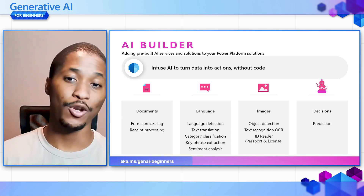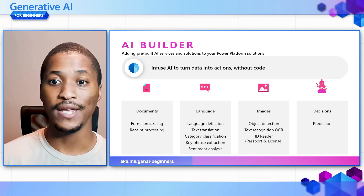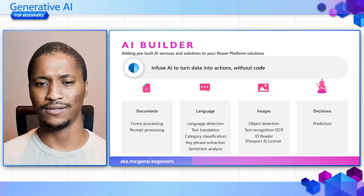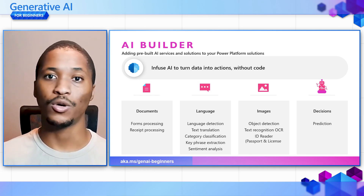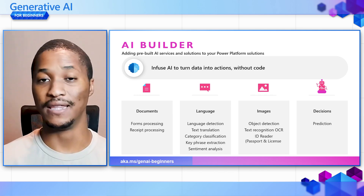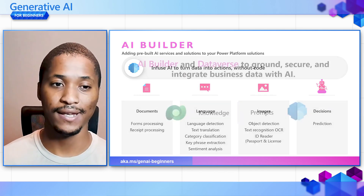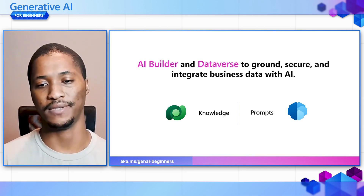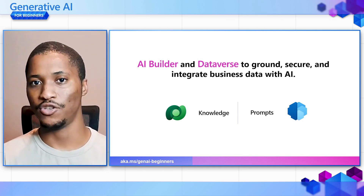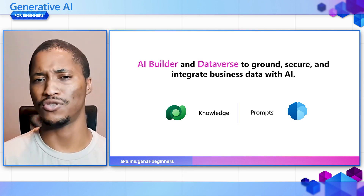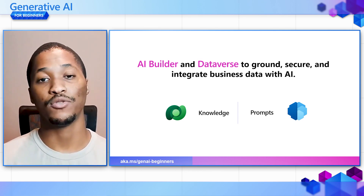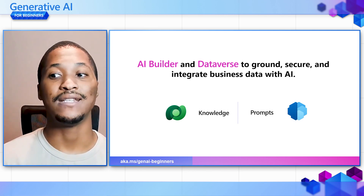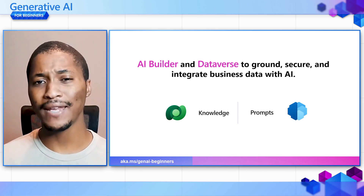You can also make decisions using the prediction model in AI Builder. But the bigger question is: this course is about Generative AI, and we've been talking about AI models that existed even before Generative AI. This is where we look at how AI Builder and Dataverse ground, secure, and integrate business data with AI. Dataverse holds your knowledge — all your information stored in a Dataverse table — and you can access and utilize that knowledge in your solutions using prompts through AI Builder.